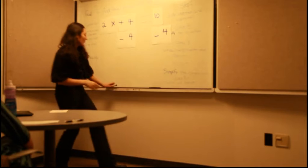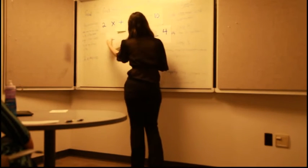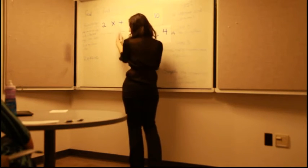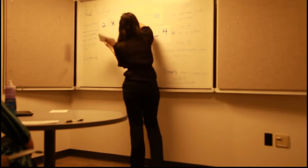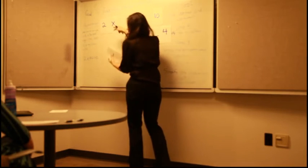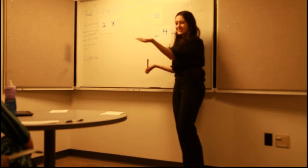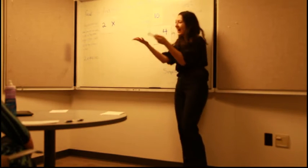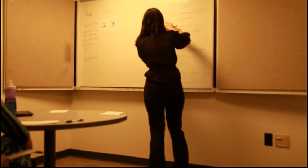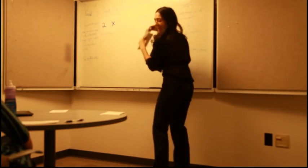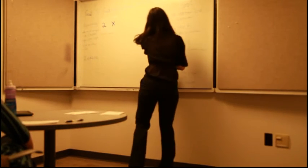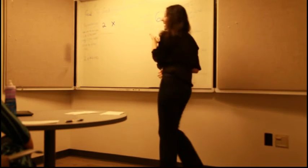So what we can do actually is we can take out these cards because these cancel out and they're going to be zero. So it's going to be 2X. And what's ten minus four? I know all of you know this. Yes. Six? Yeah, exactly. It's six. So we can take out these cards and just get a six. There we go. So 2X equals six.